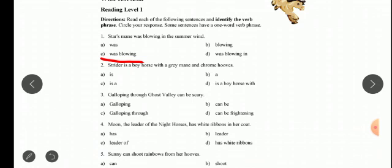The second one: 'Strider is a boy horse with a gray mane and chrome hooves.' In that, the only verb which is present in that sentence is 'is.' This is the only verb present, so this is the verb phrase. Verb phrases can be one word also.